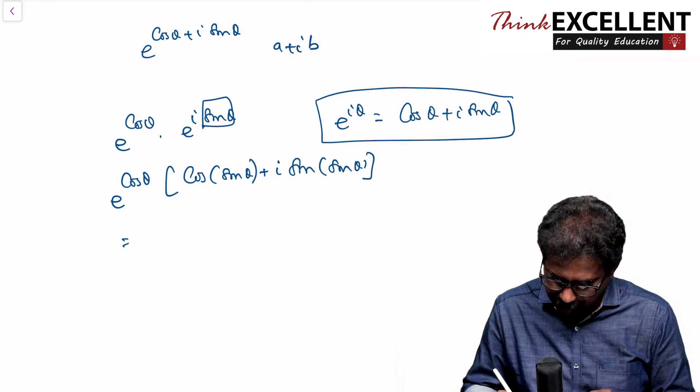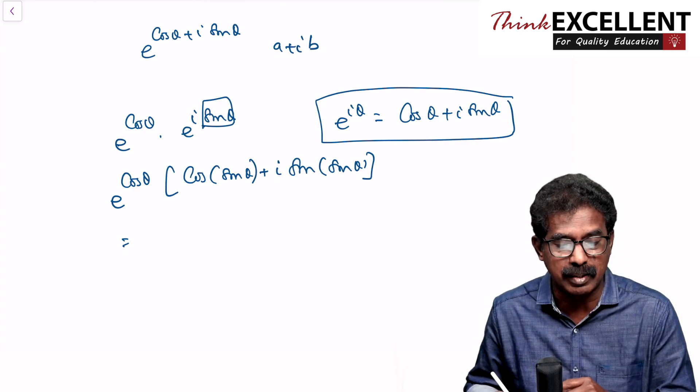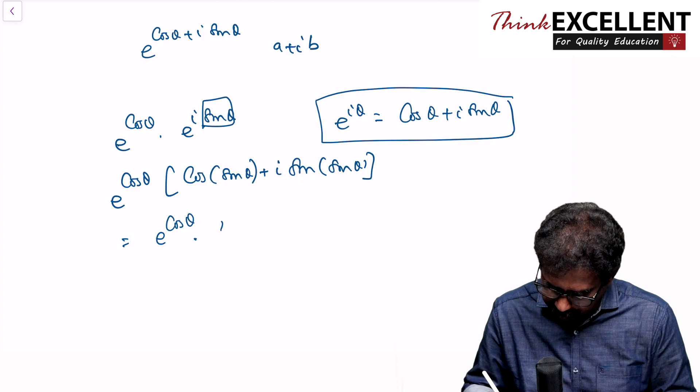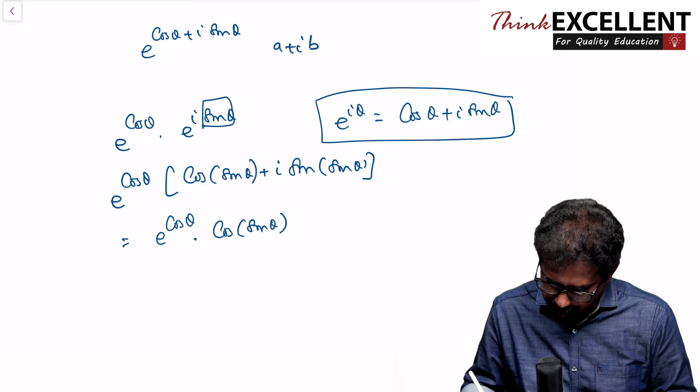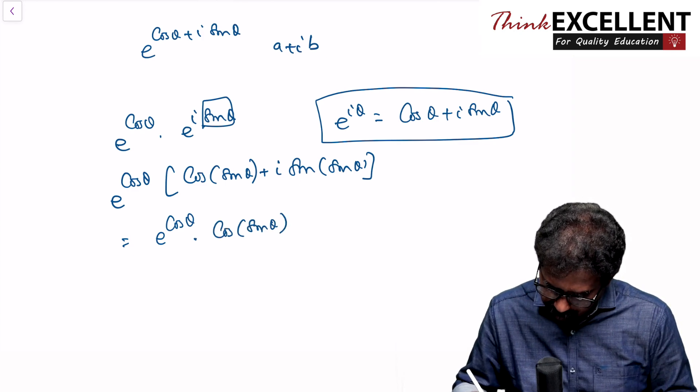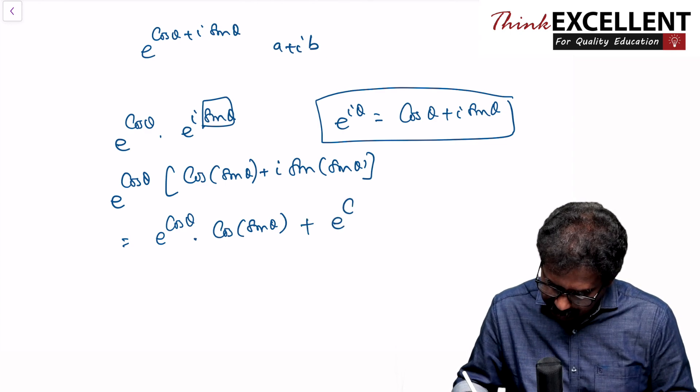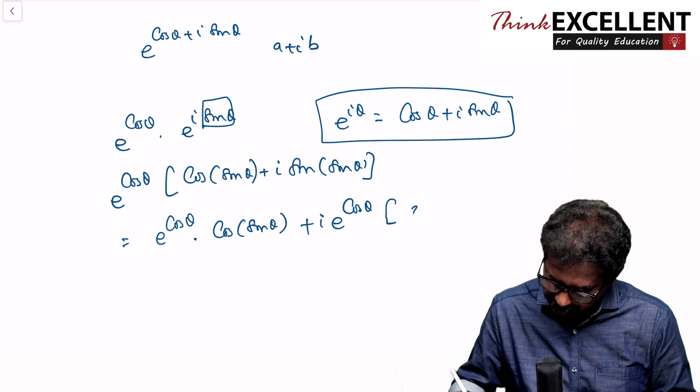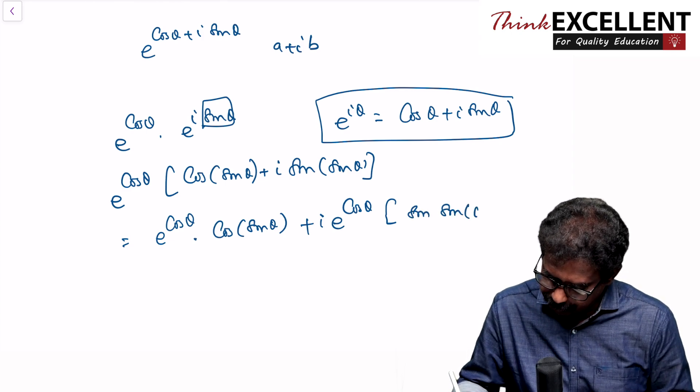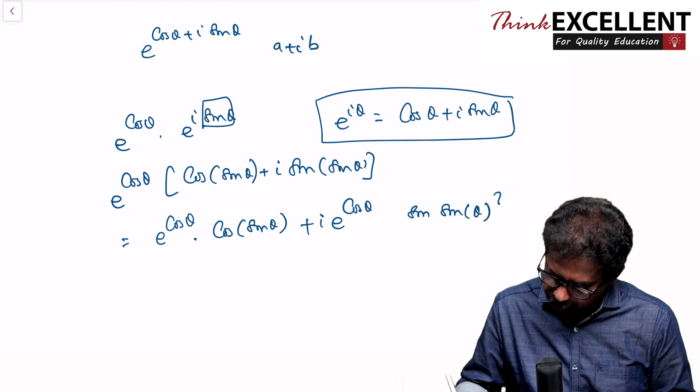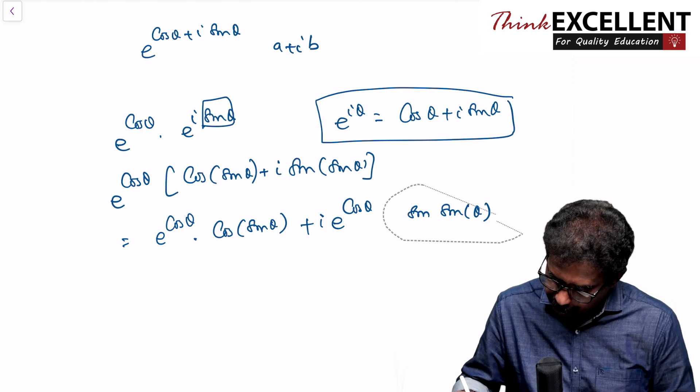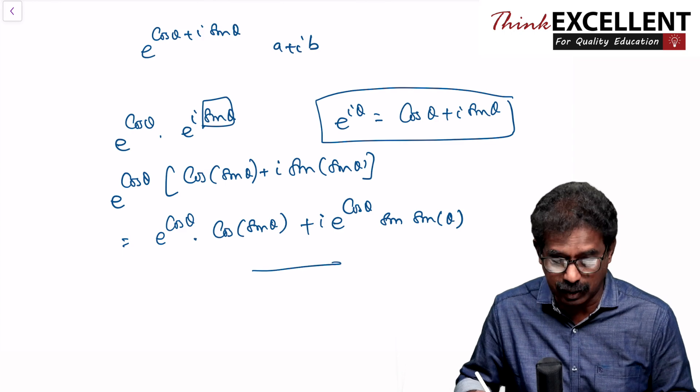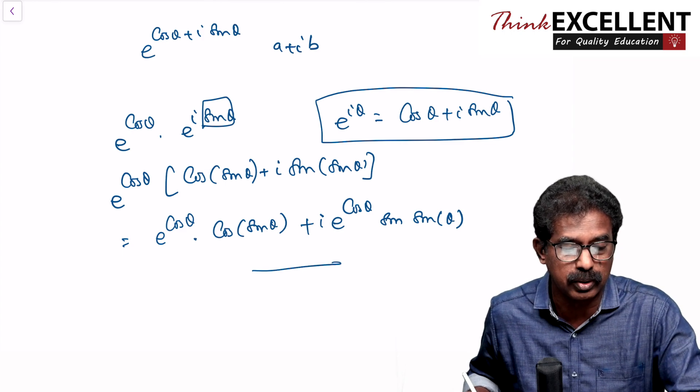Now, if you want to expand e raised to cos theta, multiply by e raised to cos theta into cos sin theta, plus e raised to cos theta into i in front of the sin sin theta. So e raised to cos theta, this is of the form a plus ib. a plus ib formula. This is in 2023 two marks compulsory question.